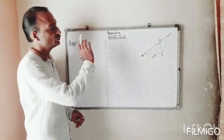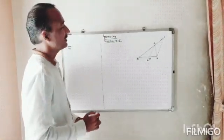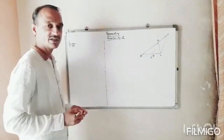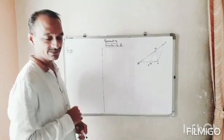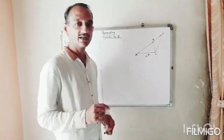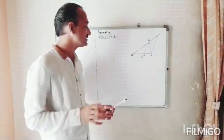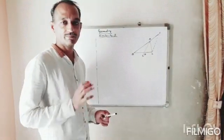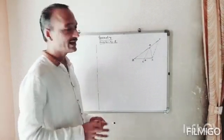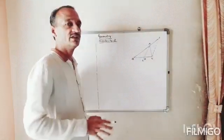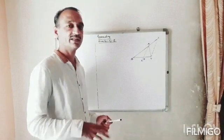Good morning. Welcome to Similarity Part 2 for 10th standard. In the last session I told you about the Basic Proportionality Theorem: in a triangle, when a line is drawn parallel to a side of a triangle, it intersects the other two sides in the same proportion. Now here we will cover the angle bisector property, then go to the application of basic proportionality, and then start with the exercises.